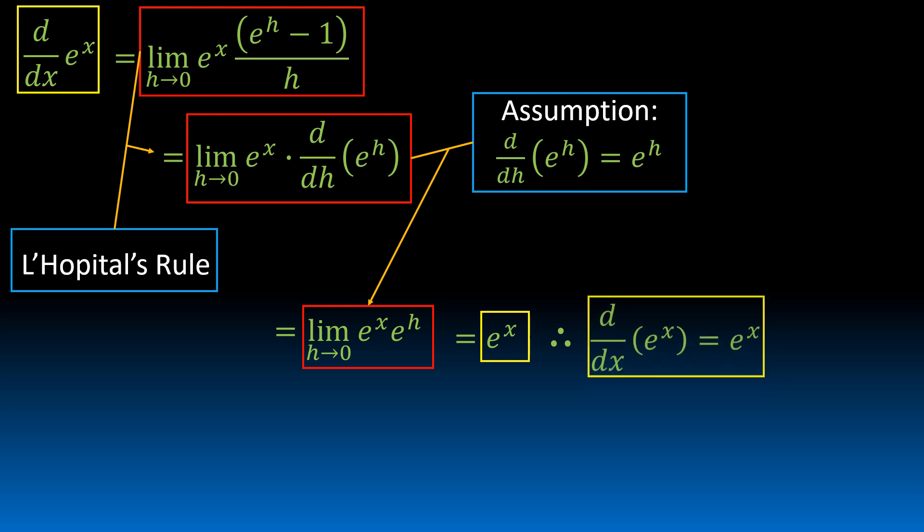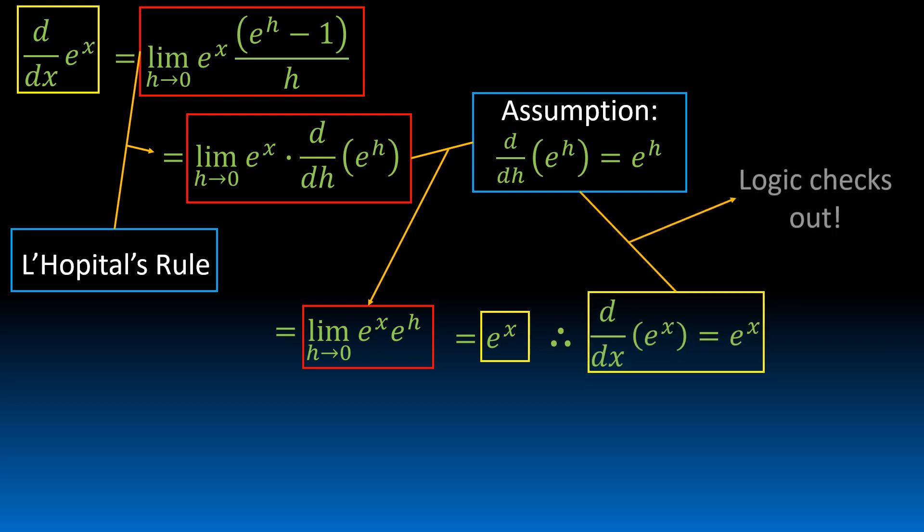We get the limit as h approaches 0 of e to the x times e to the h is going to be equal to e to the x. And we get the derivative with respect to x of e to the x is equal to itself, e to the x. As we can see, the assumption and our final results are the same — the derivative with respect to a variable of e to that variable is equal to e to that variable. So the logic checks out.